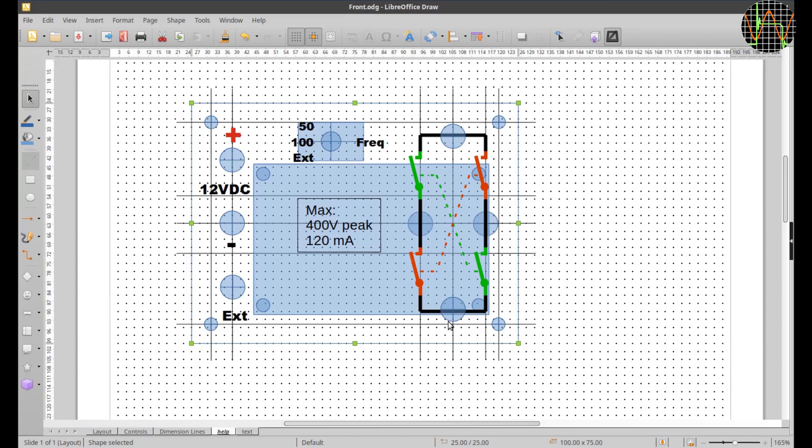Once you are happy with the arrangement, you can hide the helper lines and see how the panel will print out.